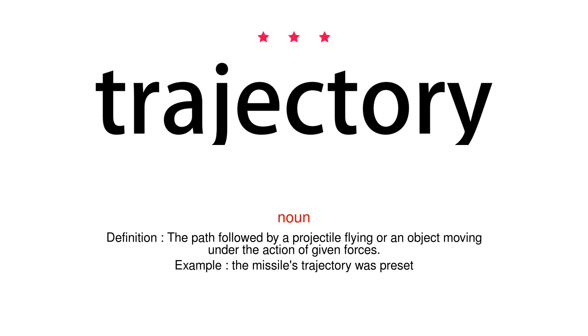Trajectory. Noun. Definition: The path followed by a projectile flying or an object moving under the action of given forces. Example: The missile's trajectory was preset.